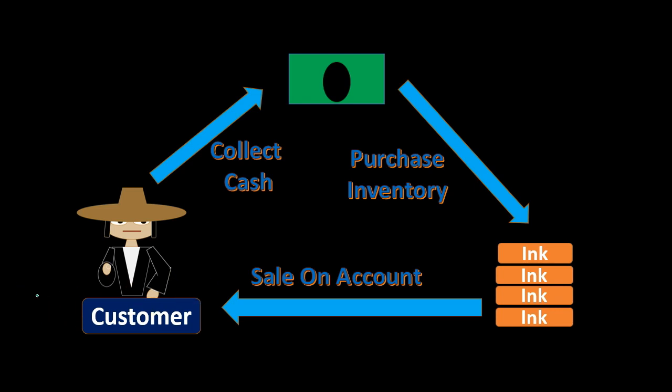The idea of this cycle is to differentiate from the service company in that we have this added factor — the added factor of inventory. This process will be happening in one form or another where we will be purchasing inventory. The goal of purchasing inventory is to mark it up; that's how we generate revenue. Once we mark it up, we sell it to the customer at the marked-up price. If we sell it on account, we increase accounts receivable and increase sales. Eventually we collect the cash, and once we have the cash, we have the funds to repeat this process and generate more revenue.